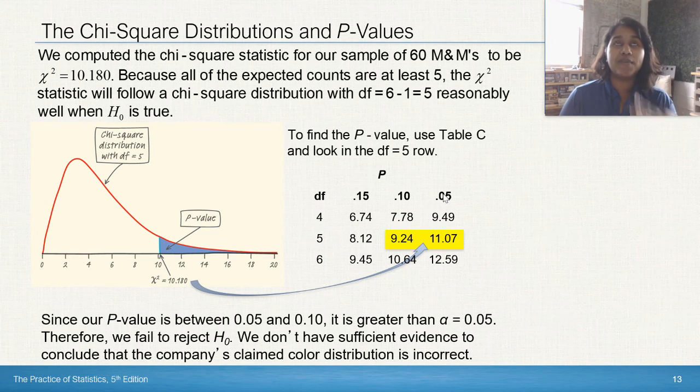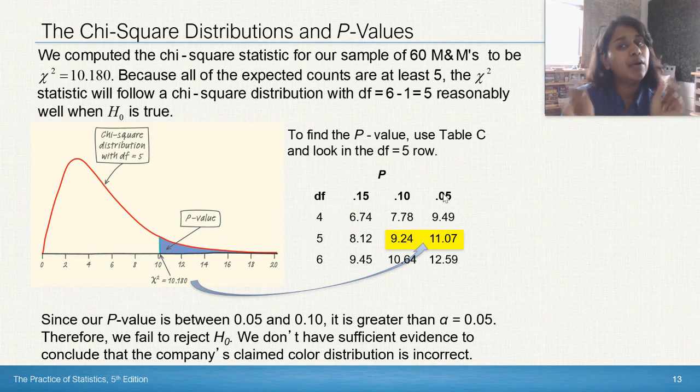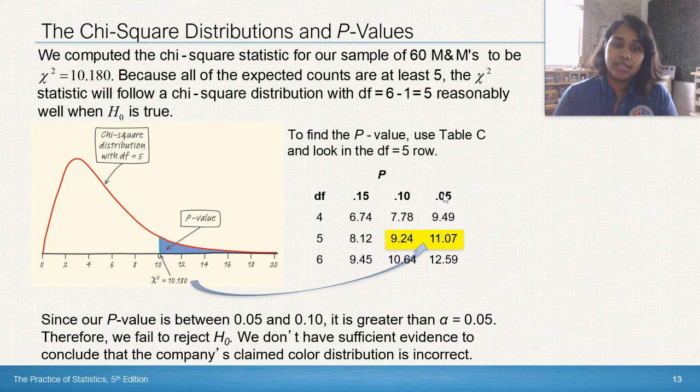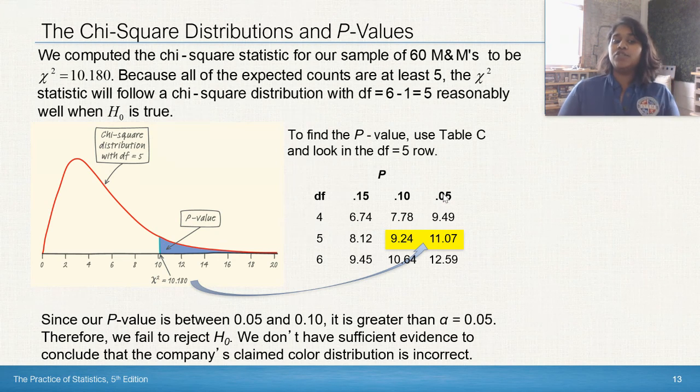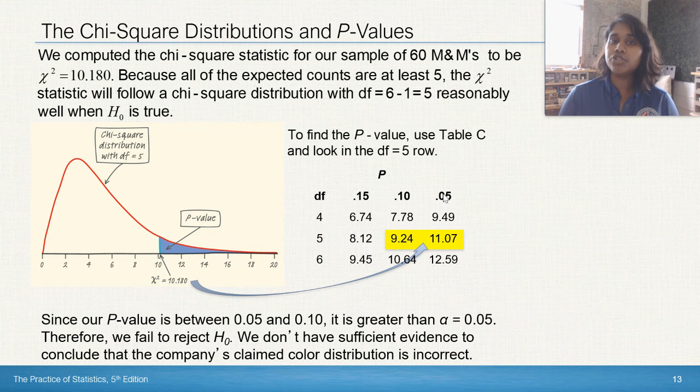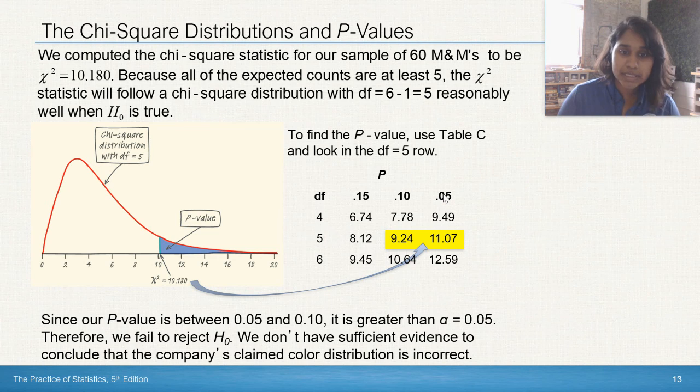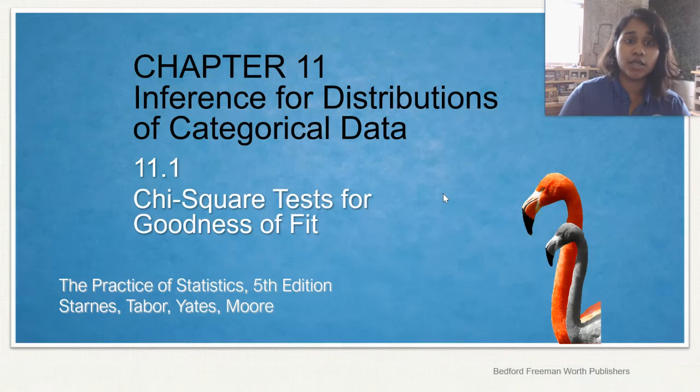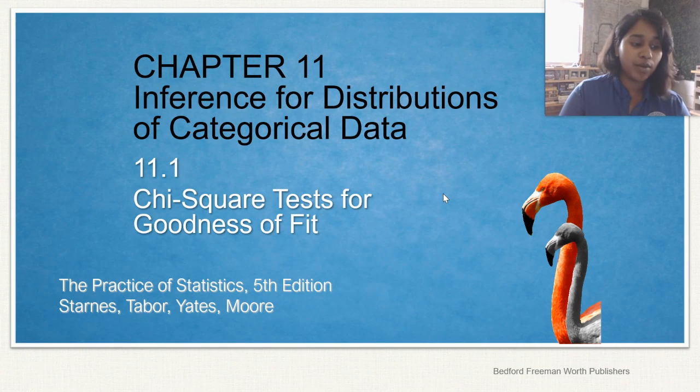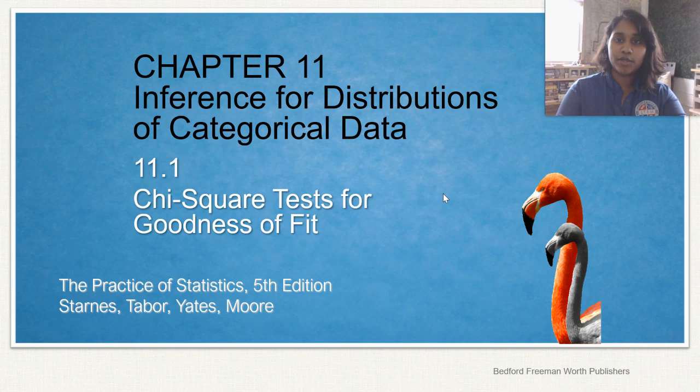So what does that mean in context? If I fail to reject the null, then that means I'm agreeing, but not really, because we don't use that word. We're agreeing with the null hypothesis. Or in essence, what's the better way to say it? We don't have sufficient evidence to conclude that the company's claimed color distribution is incorrect. We're not going to say we agree with the company's claimed color distribution. We don't use that word. But we are going to say that we don't have enough information to say it's incorrect. And that is it for Chapter 11.1, Part 1. And I'll see you for Part 2.